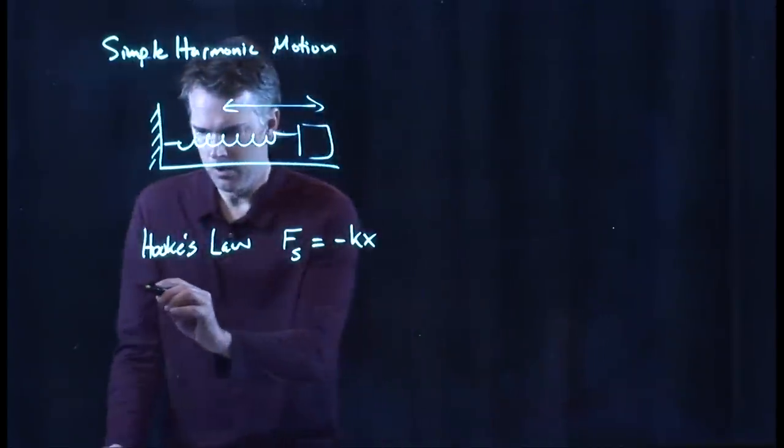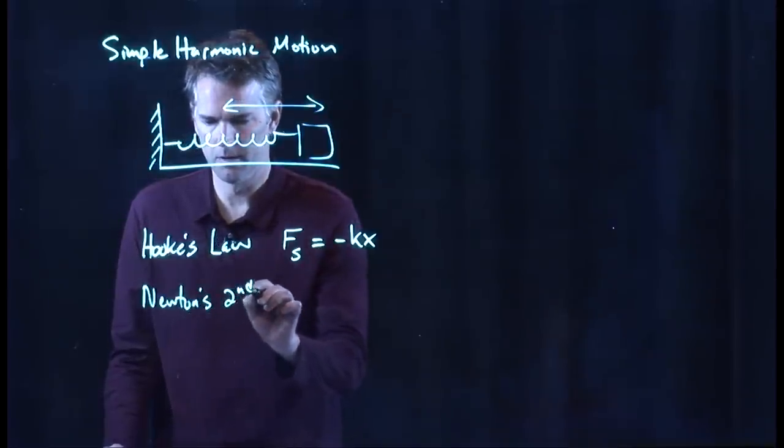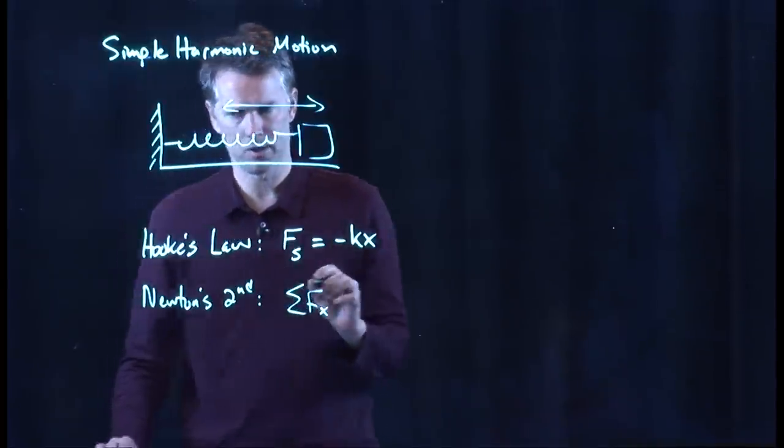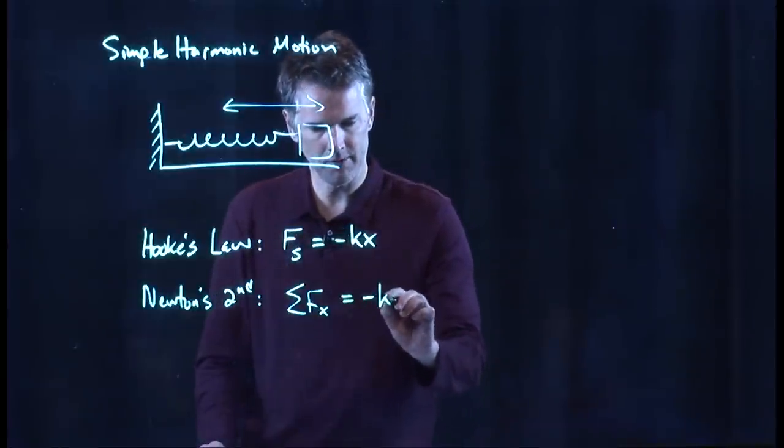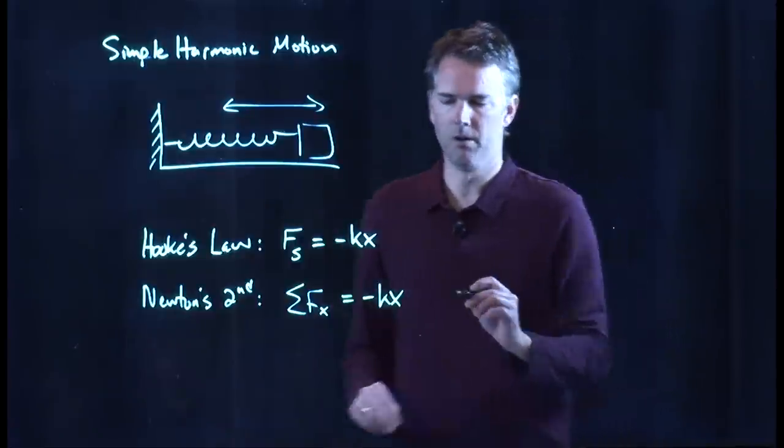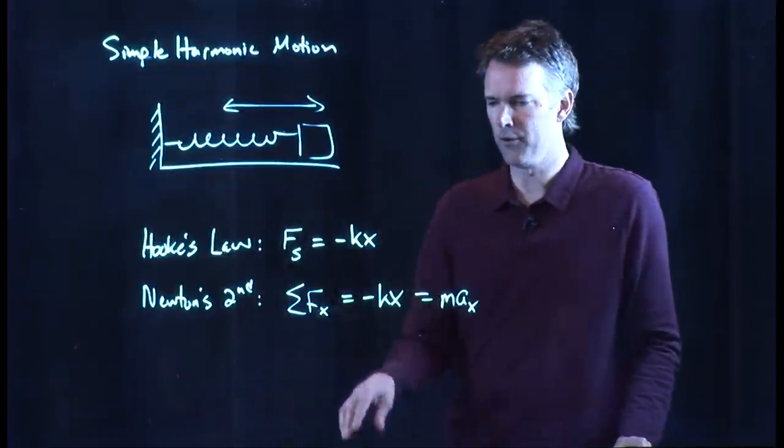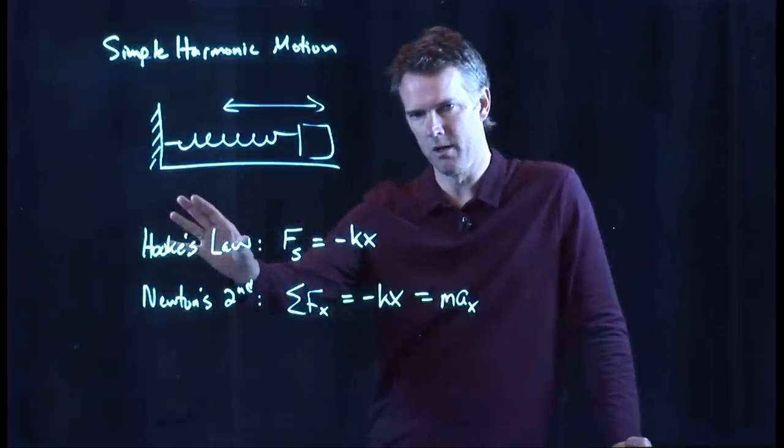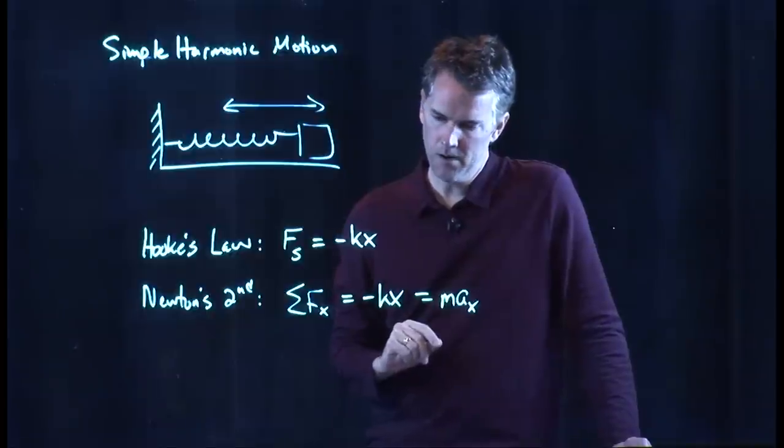But we also know that Newton's second told us the following. If I sum the forces in the x direction, I only have one in this case. It's negative kx. They have to equal the mass times the acceleration. If you have more than one force, you would put it in here. But in this case, we're ignoring friction, ignoring air resistance. All we have is the spring.